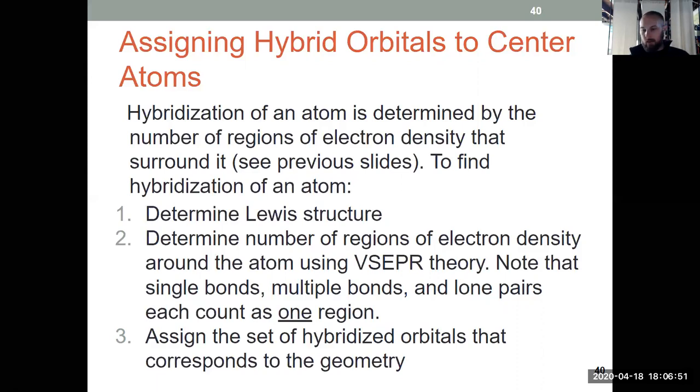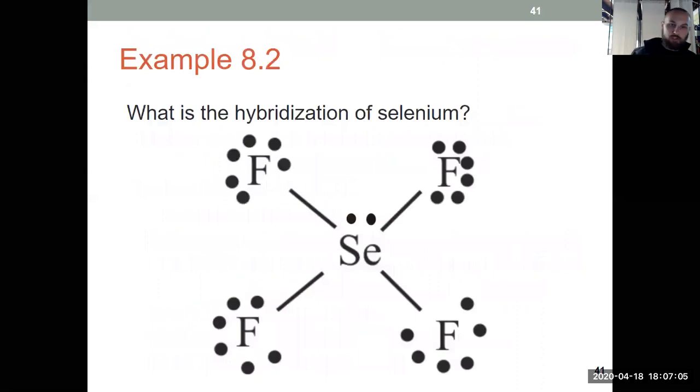Then, however many regions of electron density we have corresponds to the number of hybrid orbitals we have. So then we assign the set of hybridized orbitals that corresponds to that geometry. And this is where the superscript trick comes in that I talked about.